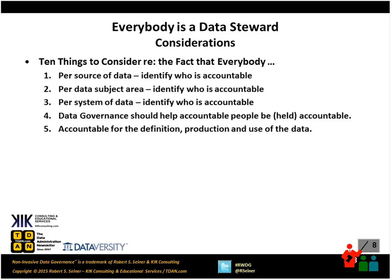There are ten things I want you to consider regarding the fact that everybody in the organization is a data steward. One of the first things we can do when putting together a governance program is, per source of data in the organization, identify who the accountable people are for that source of data. Who defined that data? Where is it coming from and who has responsibility for producing that data? Who's using that data? We can do that per source of data, per subject area of data, and per system of data or package of data in our organization.